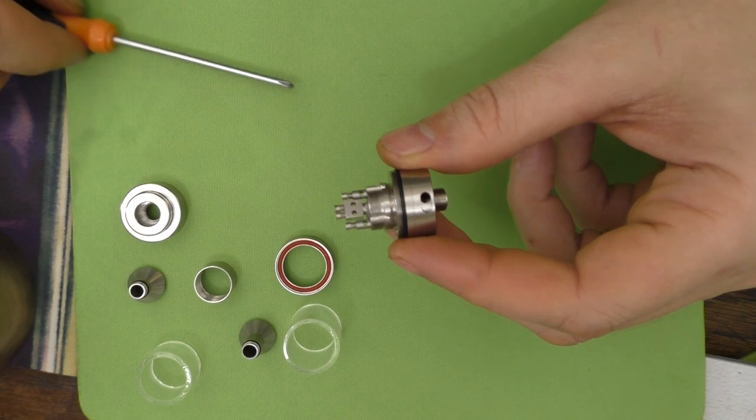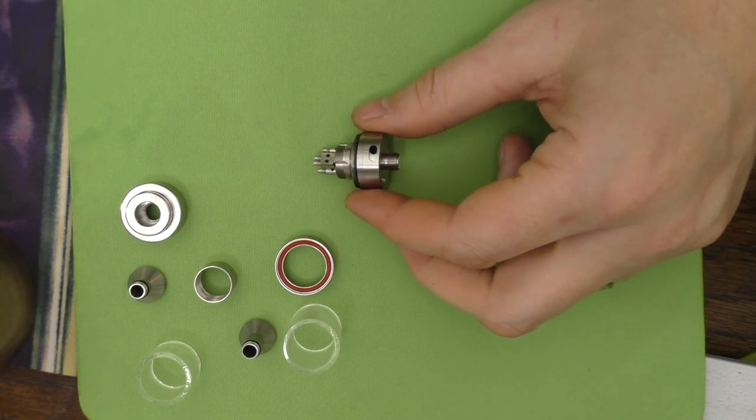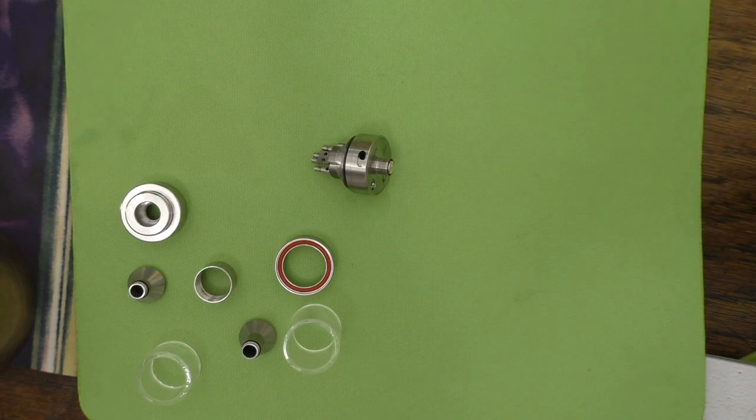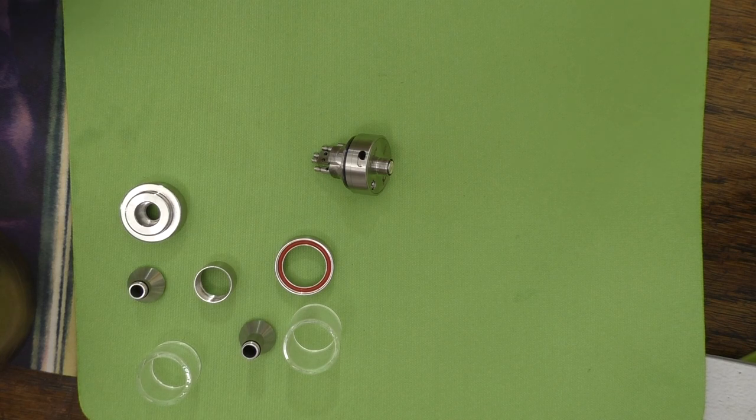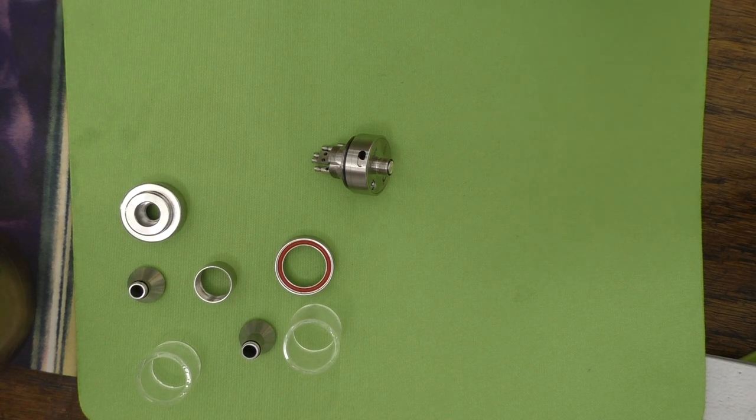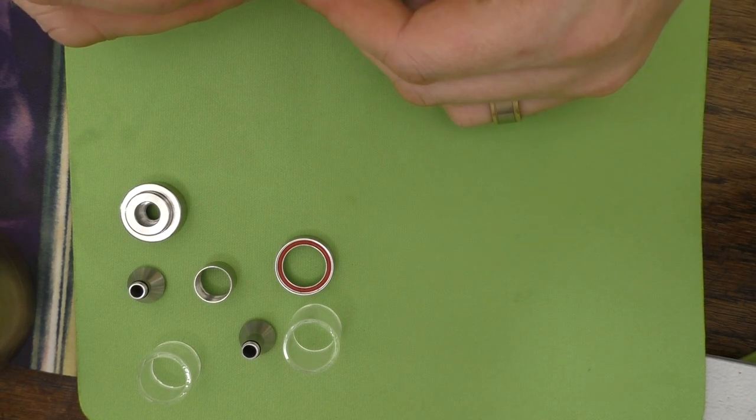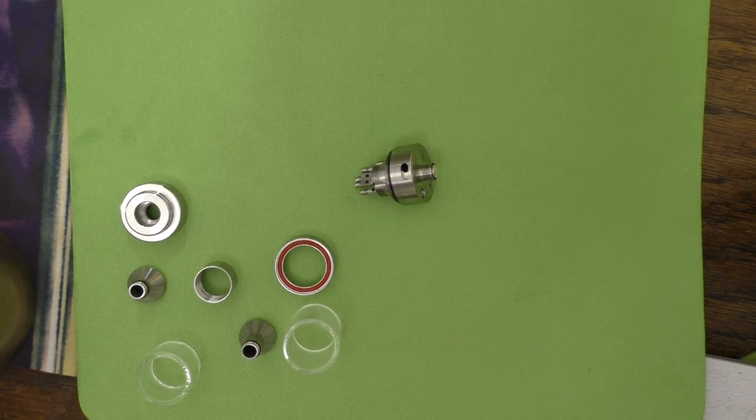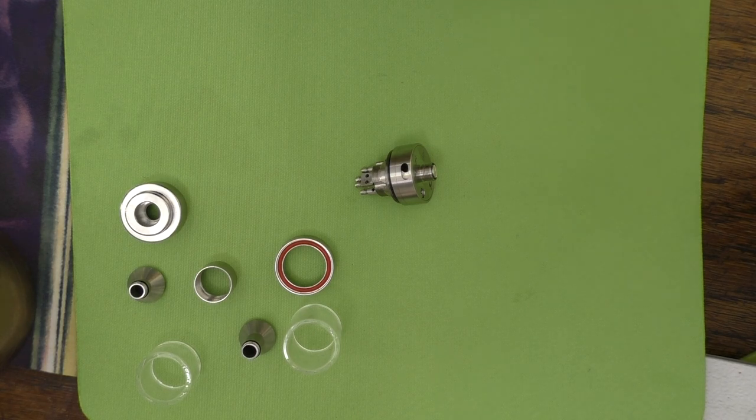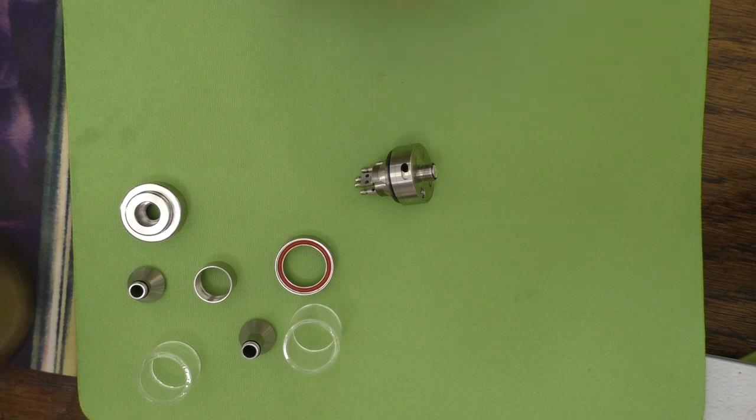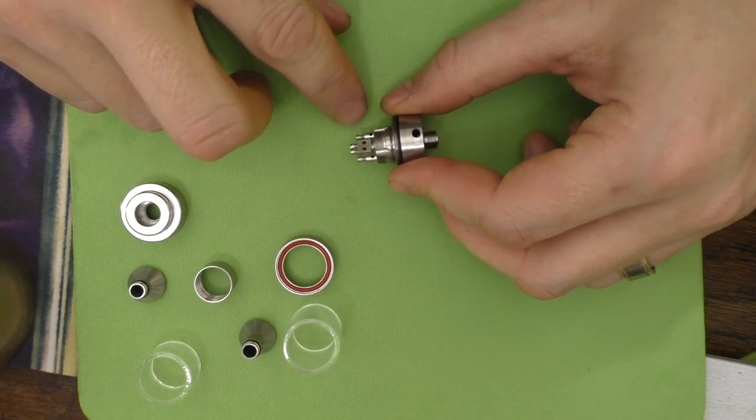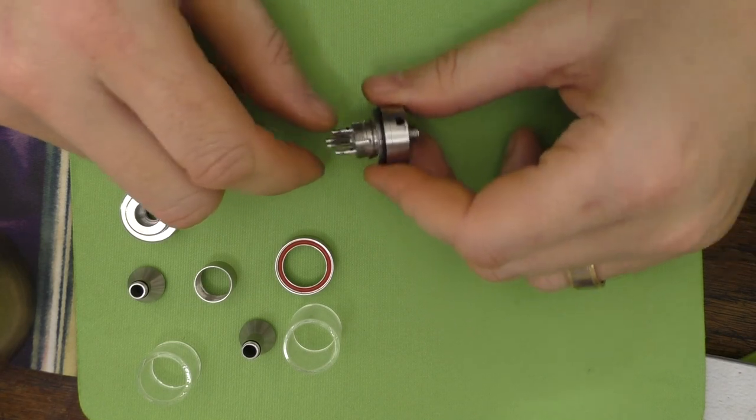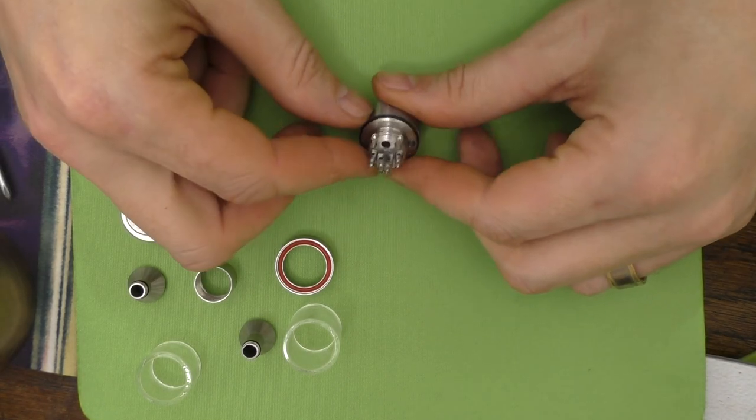So I've undone those. Size of the holes. I've measured this. So they are one and a half mil holes for putting your wires into. I'd say that's plenty big enough for anything you'd want to build in this deck.